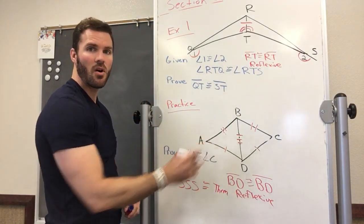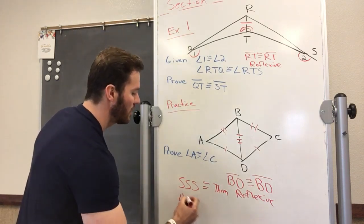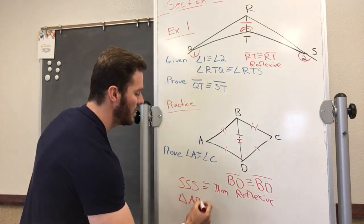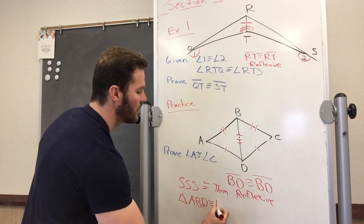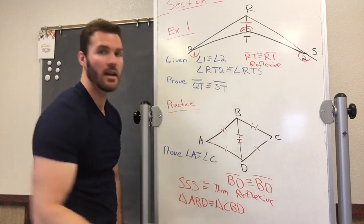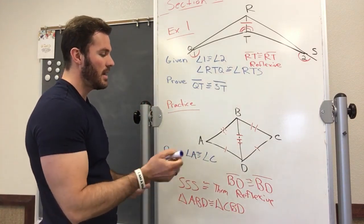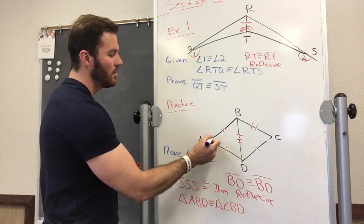That means all of these triangles are going to be congruent to each other. Triangle ABD is congruent with triangle CBD. Therefore, angle A and angle C will be congruent to each other.